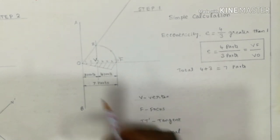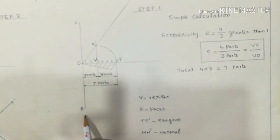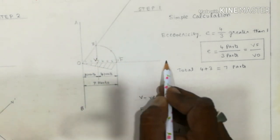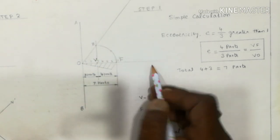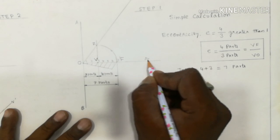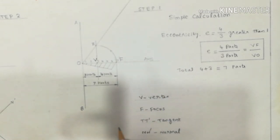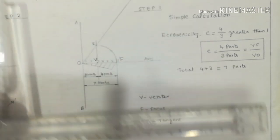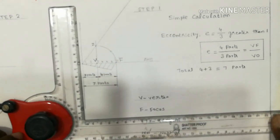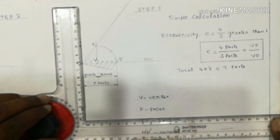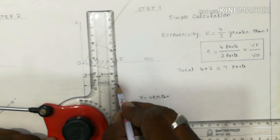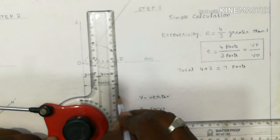Step one: draw the first vertical line using the vertical scale of the drafter. This vertical line is called the directrix. From the directrix, locate the focus point F at a distance of 40mm.